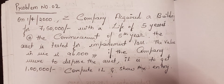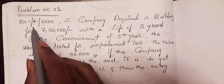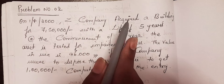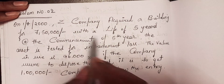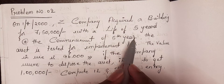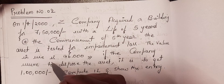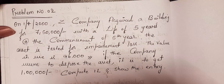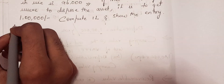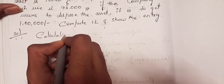Hello everyone, welcome to my YouTube channel. In this video we will solve one more problem related to impairment loss. On 14/2000, Z Company acquired a building for seven lakh fifty thousand with a life of five years. At the commencement of the fifth year, the asset is tested for impairment loss. The value in use is 96,000 and if the company were to dispose the asset it would get one lakh rupees. Compute impairment loss and show the entry.